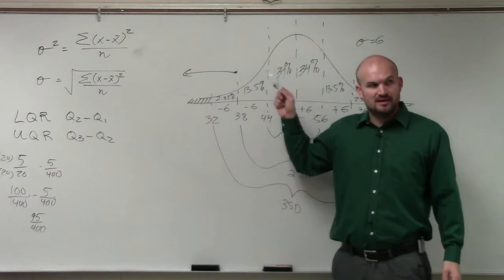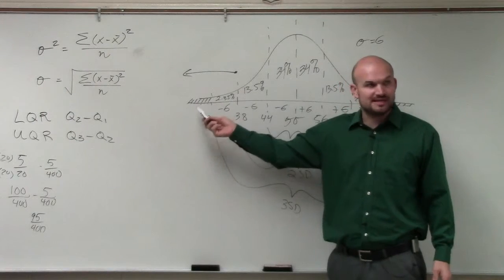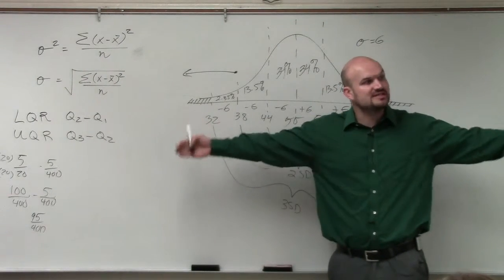The problem with just adding 2.35 is, because going to the left, we don't know what this is. We don't know this percentage. That's the fourth deviation. We don't know the fifth deviation, the sixth deviation.